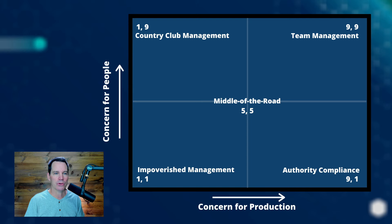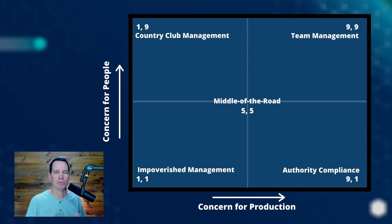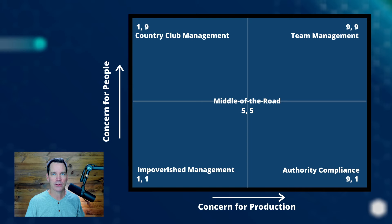Next we have what we call the country club manager, that's on the top left. That's where there's a high concern for people and lots of attention to building a positive work environment — creating a supportive and friendly atmosphere — but you're really not emphasizing tasks so much in a hands-on way. The country club manager may want tasks accomplished but isn't going to be pushy on that. The thinking is that by investing in relationships, you get beneficial production outcomes. Then we have the team management approach, which has the highest score — a nine on production and nine on people. Here the leader is really working with the team as a team member, showing high concern for both people and production in a collaborative atmosphere.